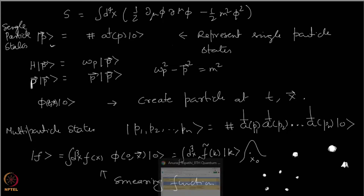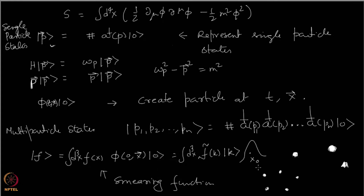That is how you construct single particle states which represent particles in the real sense. Similarly, you can do this for multi-particle states — fold each of p1, p2, ..., pn in this manner, introduce several smearing functions, and localize several particles at different locations and assign some momentum to them. The point is that the states |k⟩ form a good basis for writing down single particle states in general. These precise momentum eigenstates form a good basis, and similarly multi-particle states form a good basis for describing things.